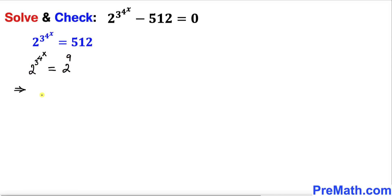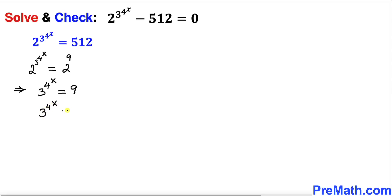So we can write 3 power 4 power x equals to 9. Now we know that 9 can be written as 3 power 2. So our equation becomes 3 power 4 power x equals to 3 power 2. Our bases on both sides are the same, so we can equate the exponents.